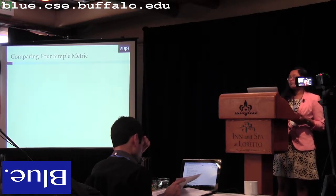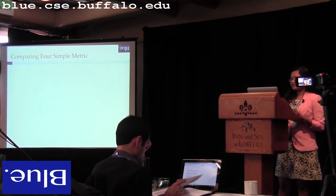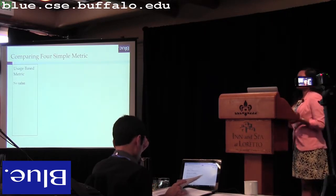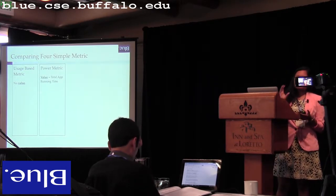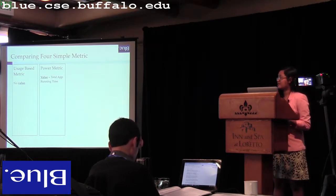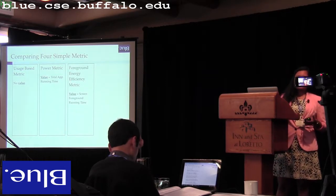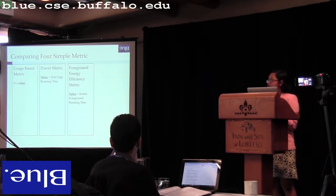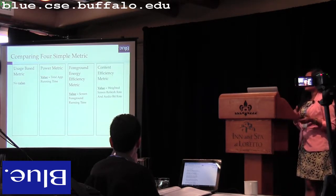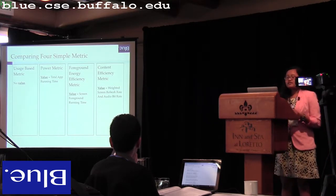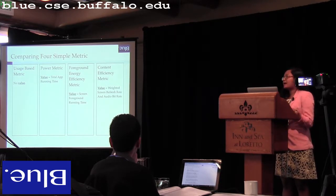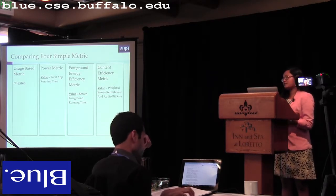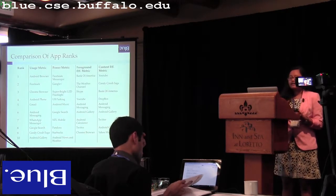We collected data over two months, and then calculated four simple metrics for each app seen in the study. The first is the usage-based metric, which is basically total energy consumption of an app with no sense of value. Then the power metric, which is total energy consumed divided by total running time. Then the foreground energy efficiency metric, where we only consider the time and energy when the app was in screen foreground. And the fourth is the content efficiency metric we just discussed. Based on these metrics, we ranked all apps to get the top 10 and bottom 10 apps for each metric.